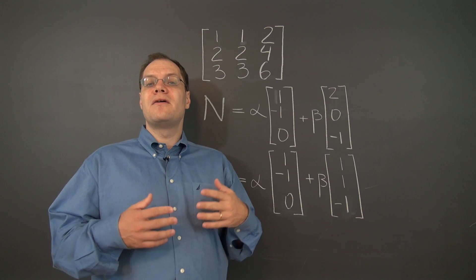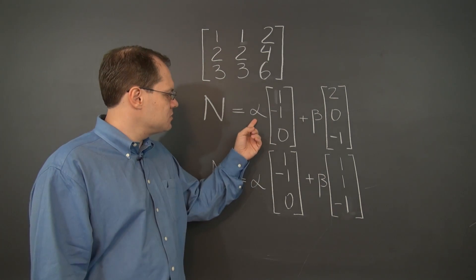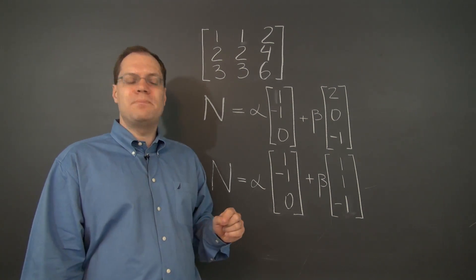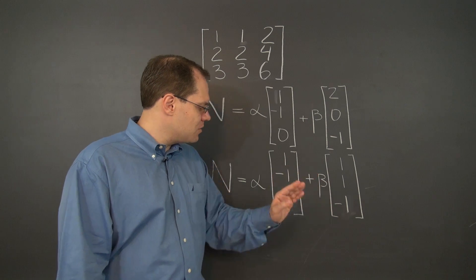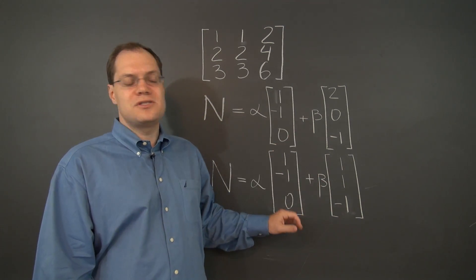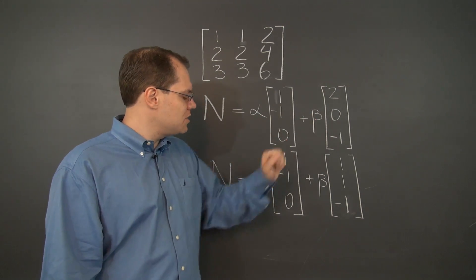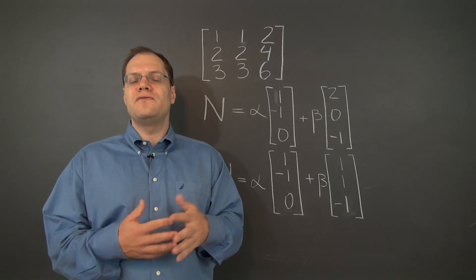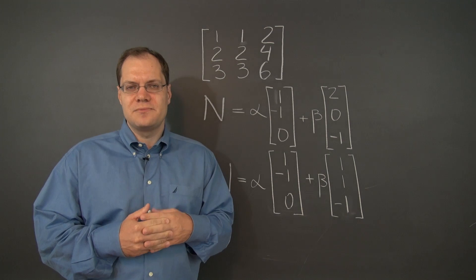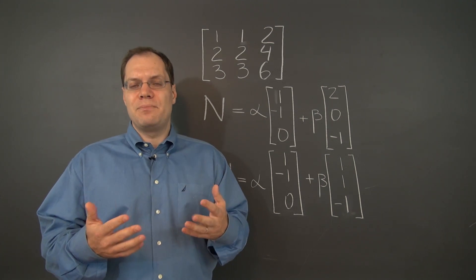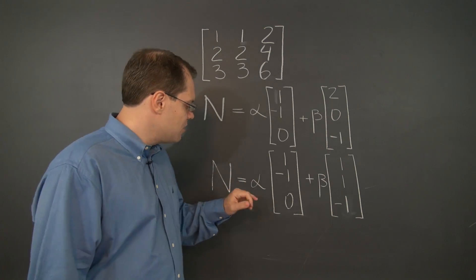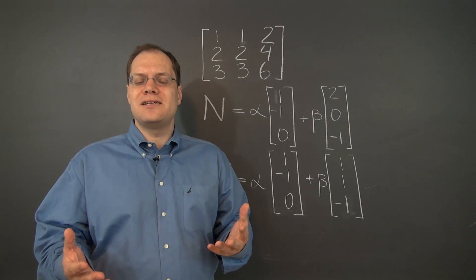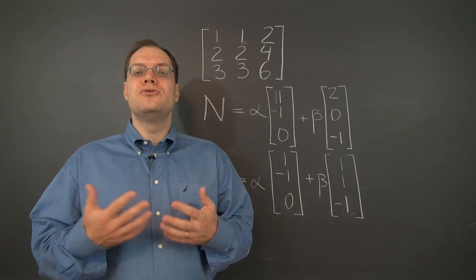To get the same vector from the second expression we have to take alpha equals two and beta equals one. The question was: isn't that a little bit confusing that alpha equals one here and at the same time alpha equals two there? Would it be better to use alpha-one and beta-one in one expression so they don't mix? So you could say alpha equals one, beta equals one, and alpha-one equals two, beta-one equals one — that way there's no confusion. That's a good comment and a somewhat valid point. Naming the coefficients alpha-one and beta-one would certainly not cause any problems, except that perhaps there will be too many symbols on the board.